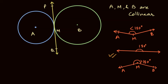So let us join AM and BM. They do look like they are collinear, but we still want to prove that. We know that PQ is the tangent to the circle with center A and also a tangent to the circle with center B. Therefore, AM and BM are radii of the first and second circles respectively.